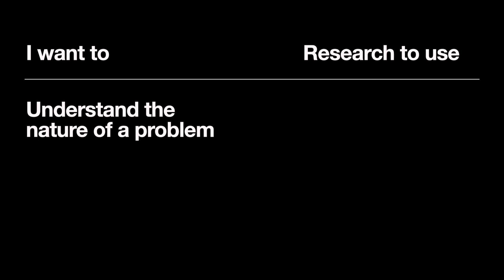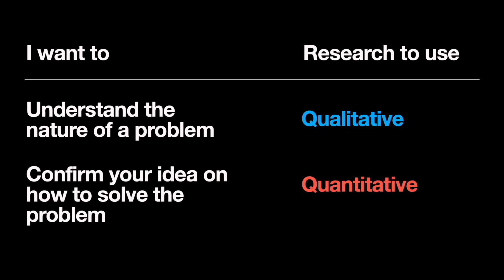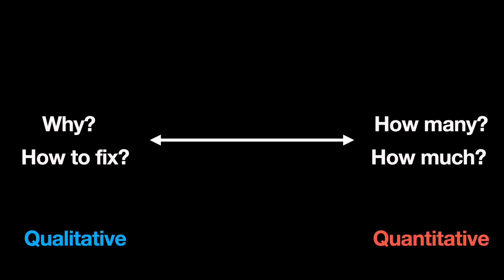The type of research should be selected according to your goals. For example, if you want to understand the nature of a problem users face, you will use qualitative research. But if you want to validate a hypothesis about how something should be solved, you will likely use quantitative research such as A/B testing. Here is a quick memo for choosing the right type of research.